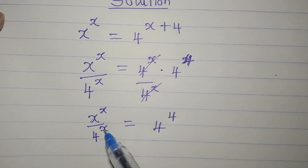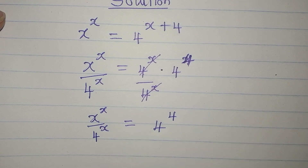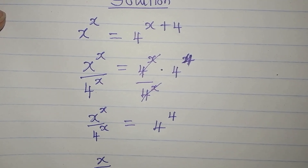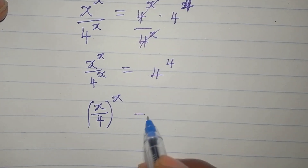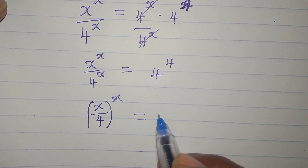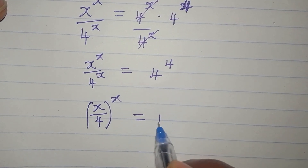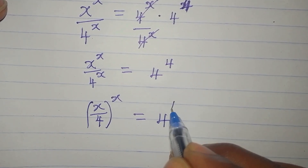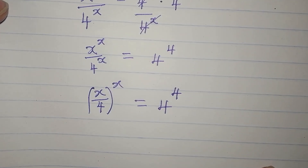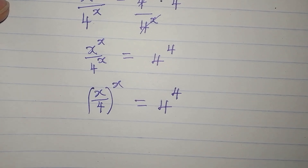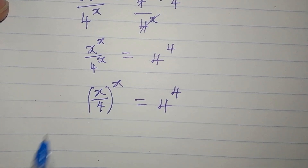We can combine these and let them have the same power, so we have x over 4, raised to the power of x, equal to 4 raised to the power of 4.